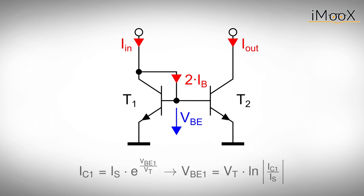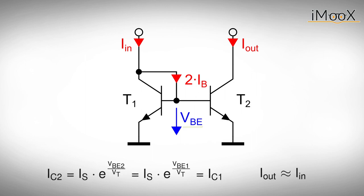If we force a current through this transistor, its base emitter voltage, VBE1, will set itself to the value needed to conduct the current through the collector. As the base terminals are connected, the second transistor shares the base emitter voltage. If both transistors are the same, T2 conducts the same collector current as T1 does.